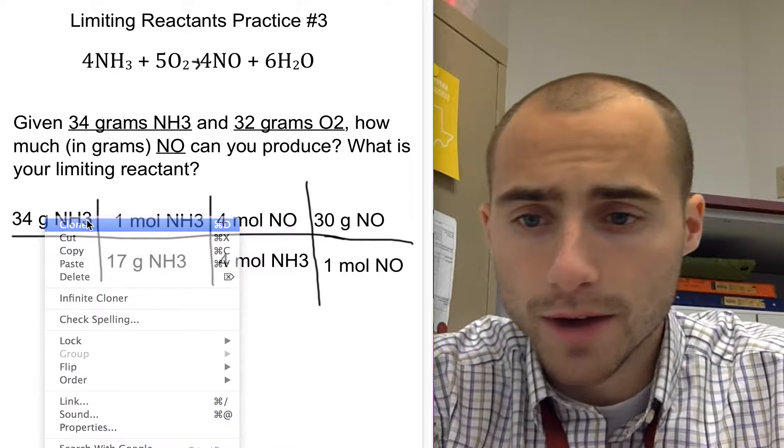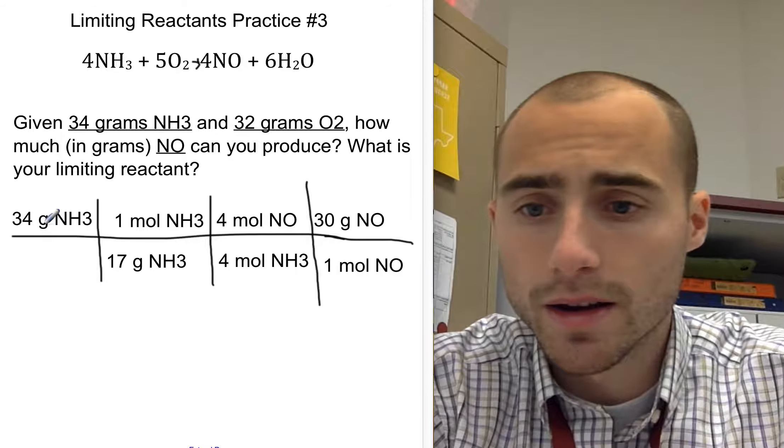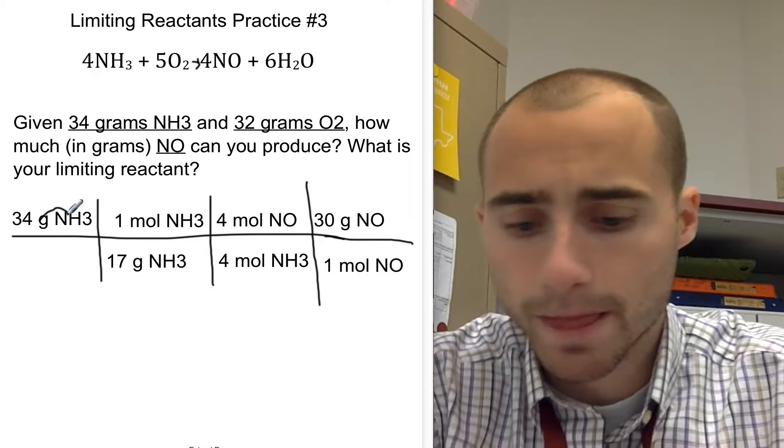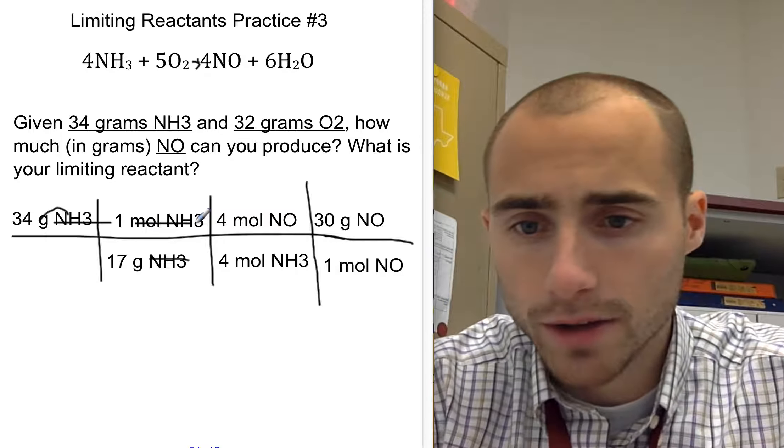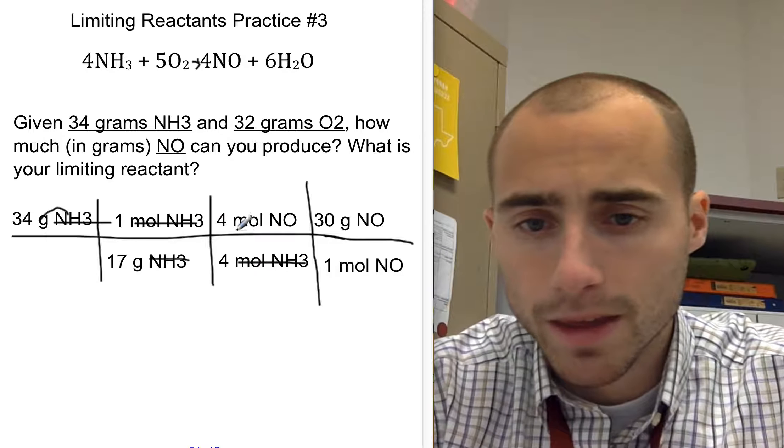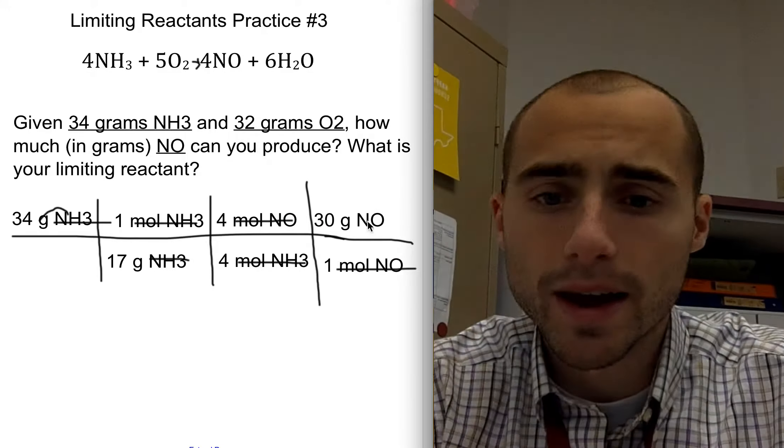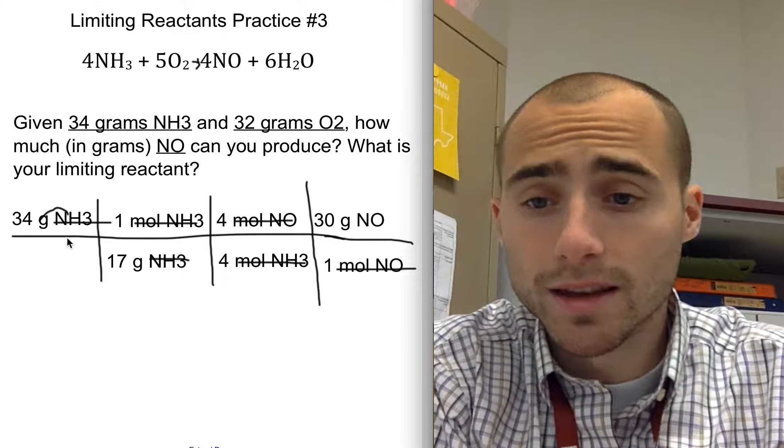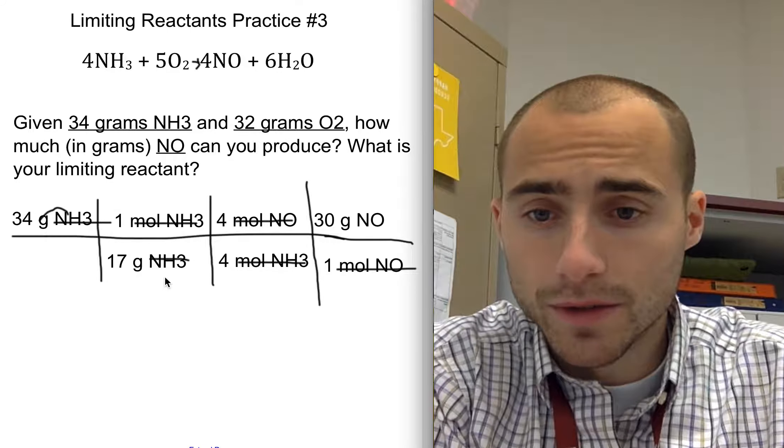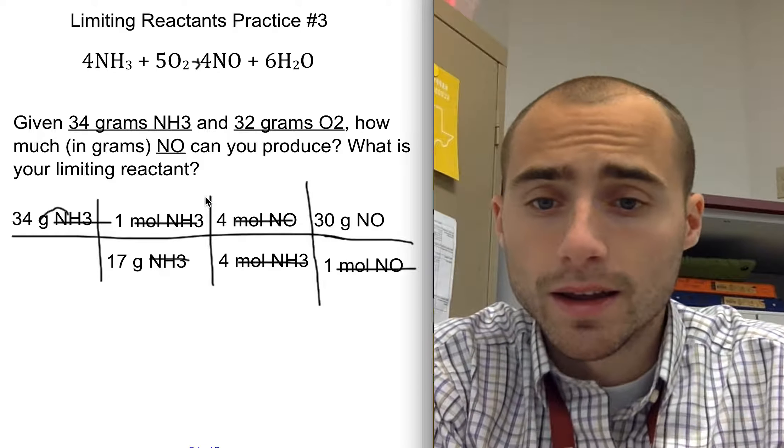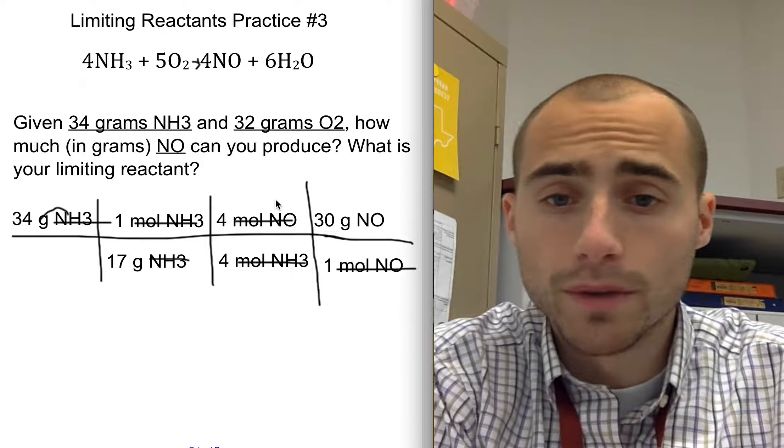So we've canceled out grams of NH3, canceled out moles of NH3, canceled out moles of nitrogen monoxide, and we've arrived all the way at grams of nitrogen monoxide. How did I get there? This was my given from the problem. This is converting my molar mass. This is my mole ratio. I got this, how you convert moles of my product.